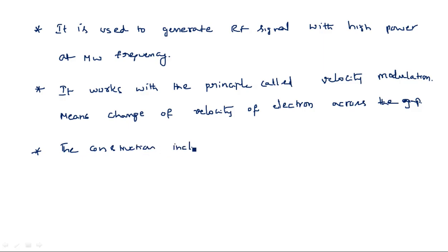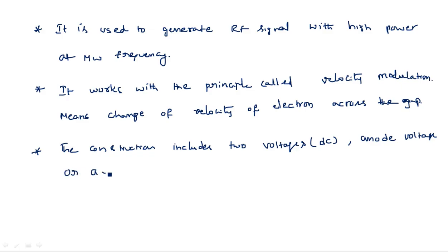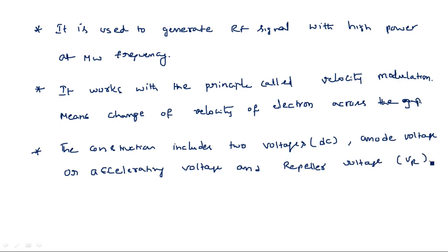The construction includes two DC voltages. The first is the anode voltage Va, also called the accelerating voltage. The second is the repeller voltage Vr. These are the two voltages required for the entire operation of the reflex klystron.